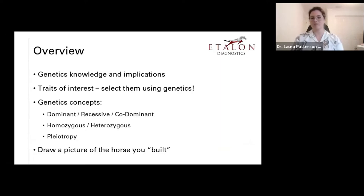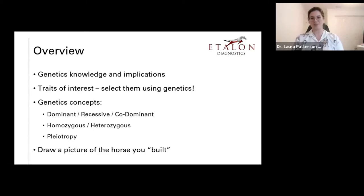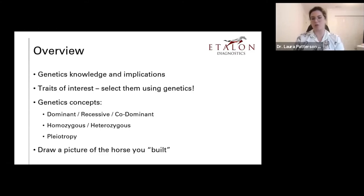For this workshop today, what we'll be doing is learning a little bit about genetics — implications of what the genes may cause on a horse. We're going to learn about traits of interest and how to select them using genetics. We'll cover genetic concepts like dominant, recessive, co-dominant, homozygotes, heterozygotes, and also a fancy term called pleiotropy. And at the end, I will have you all draw a picture or use your art skills to depict the horse you build using the genetics. It doesn't have to be drawn — it could be a collage, a painting, or anything.